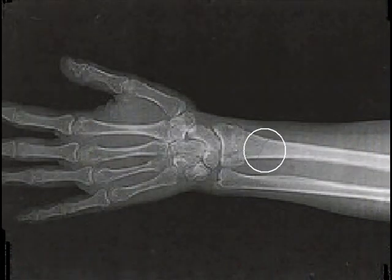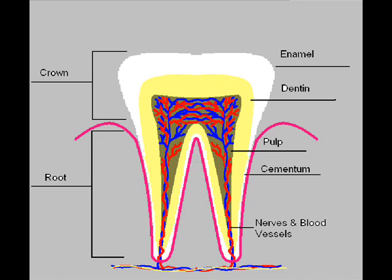Some people think that teeth are bones, but they are most definitely not bones because they are not made of the same thing as bones. Teeth are made up of an outer enamel shell made up of crystallized calcium phosphate, dentine — a calcified tissue — dental pulp, made up of living tissues and cells which house the blood vessels and nerves, and cementum, which anchors the tooth to the jaw bone.